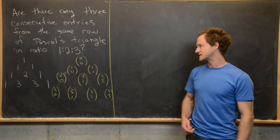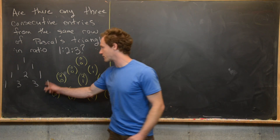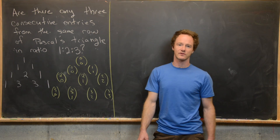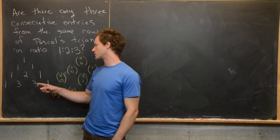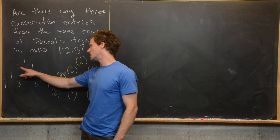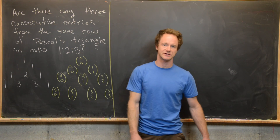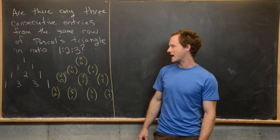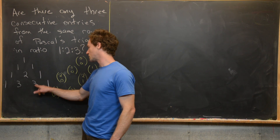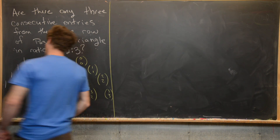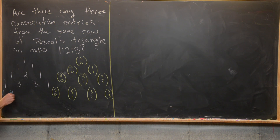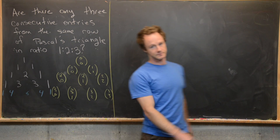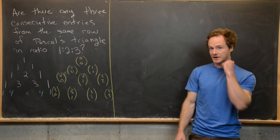Let's recall what Pascal's triangle looks like. It starts off with a single entry of 1, then the second row is 1, 1. All other rows are formed by taking two terms from the previous row and adding them: 1 plus 1 is 2, then you put 1s on the outside. Continuing: 1 plus 2 is 3, 2 plus 1 is 3, then 1, 3 plus 1 is 4, 3 plus 3 is 6, 1 plus 3 is 4, and an extra 1.